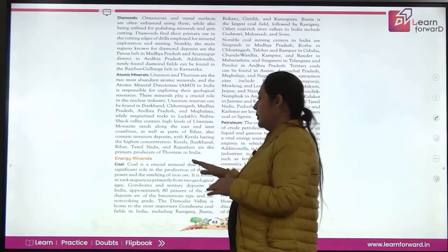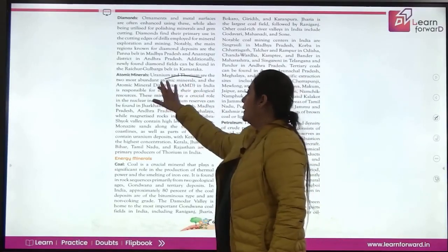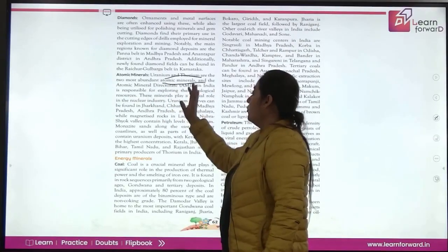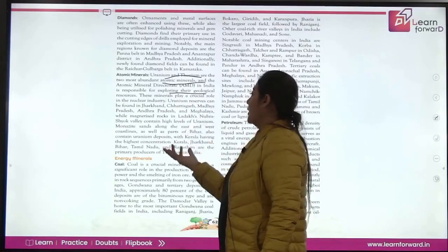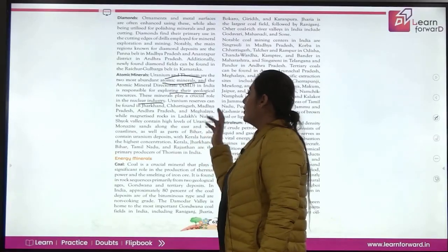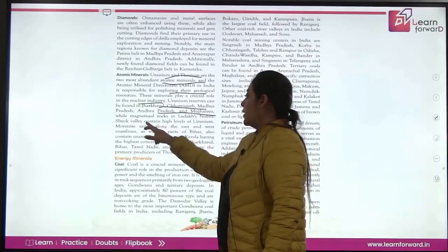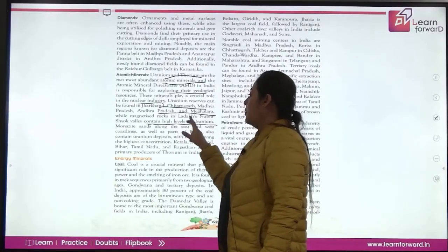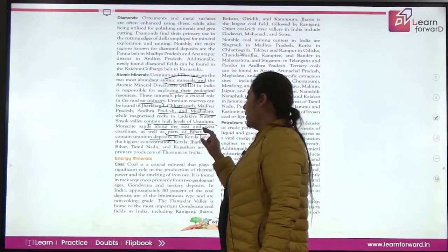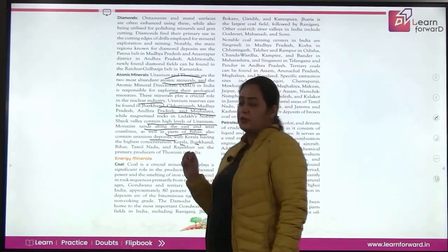There are also atomic minerals such as uranium and thorium, which are abundantly available. AMD (Atomic Minerals Directorate) is responsible for exploring these minerals, which play a very important role in the nuclear industry. Uranium reserves are in Jharkhand, Chhattisgarh, Madhya Pradesh, Andhra Pradesh, and Meghalaya, where uranium is extracted from the Singhbhum valley. Monazite sands along the eastern and western coastlines contain thorium, with Kerala having the highest concentration. Kerala, Jharkhand, Bihar, Tamil Nadu, and Rajasthan are primary producers of thorium in India.